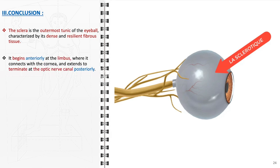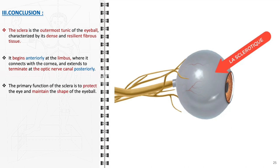It begins anteriorly at the limbus, the distinct junction where the cornea meets the sclera, and extends posteriorly to terminate at the optic nerve canal. The primary function of the sclera is twofold: it serves as a protective shield for the eye and is instrumental in maintaining the eyeball's shape.